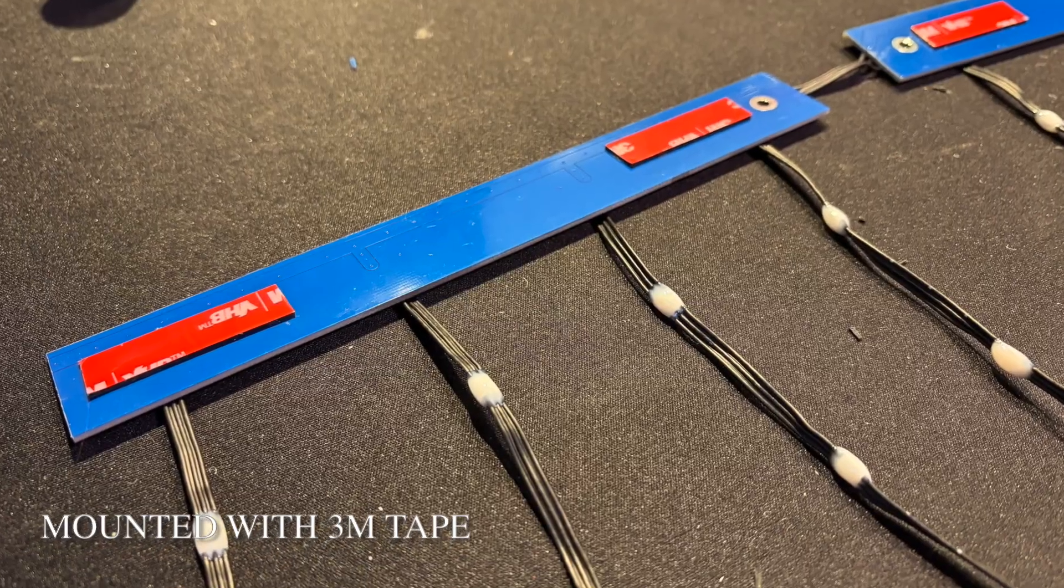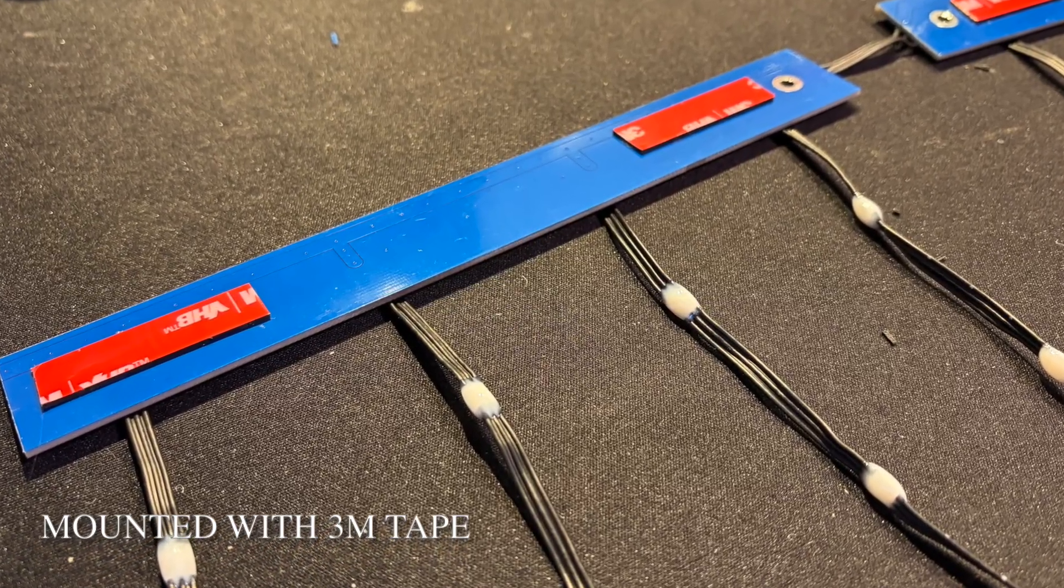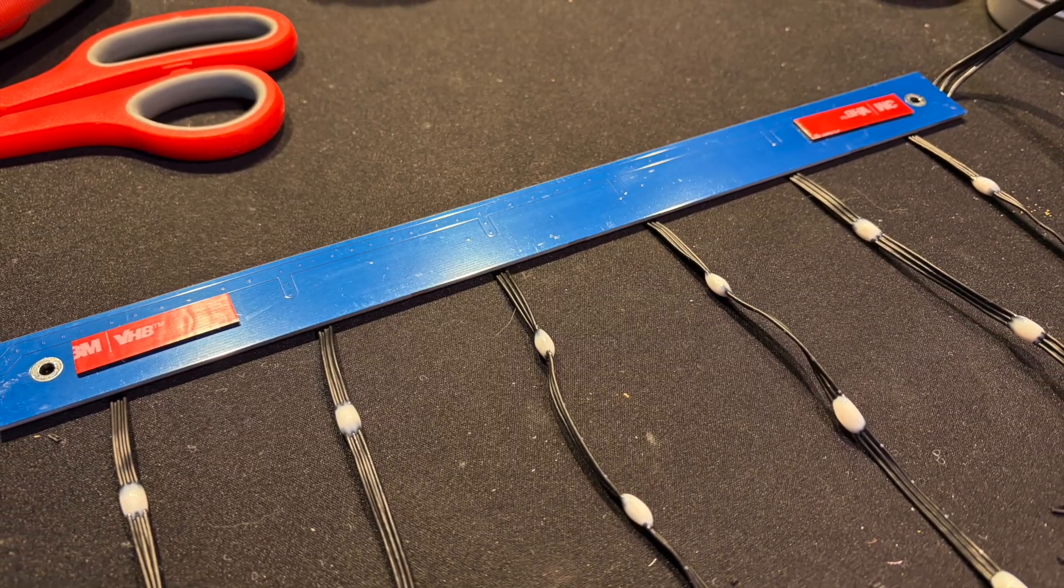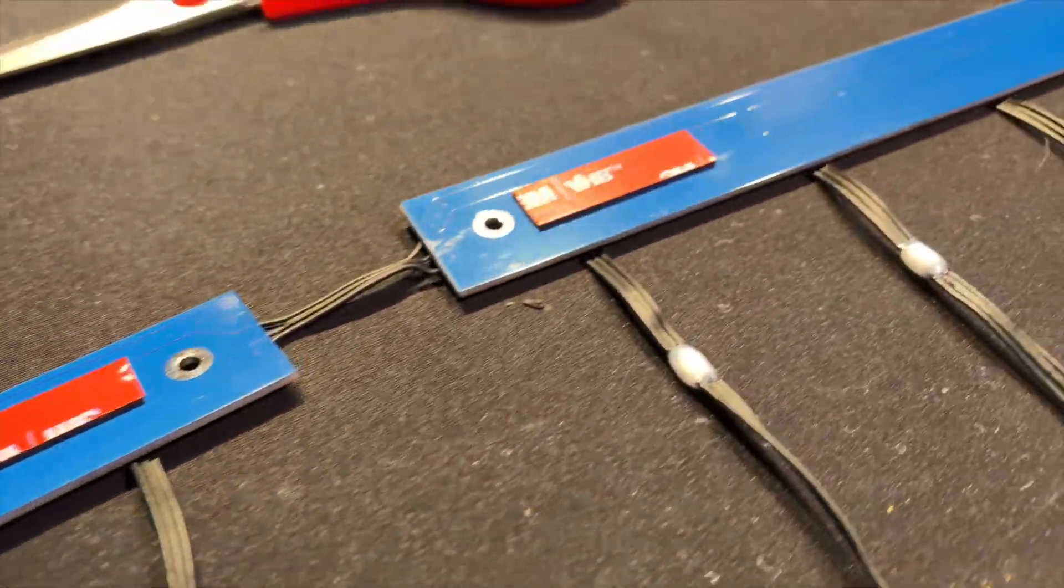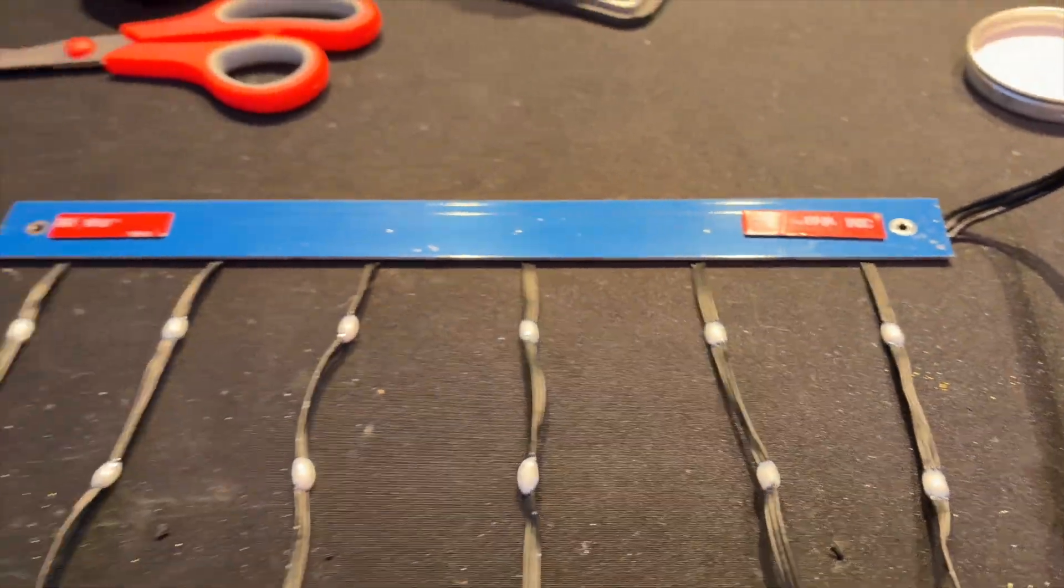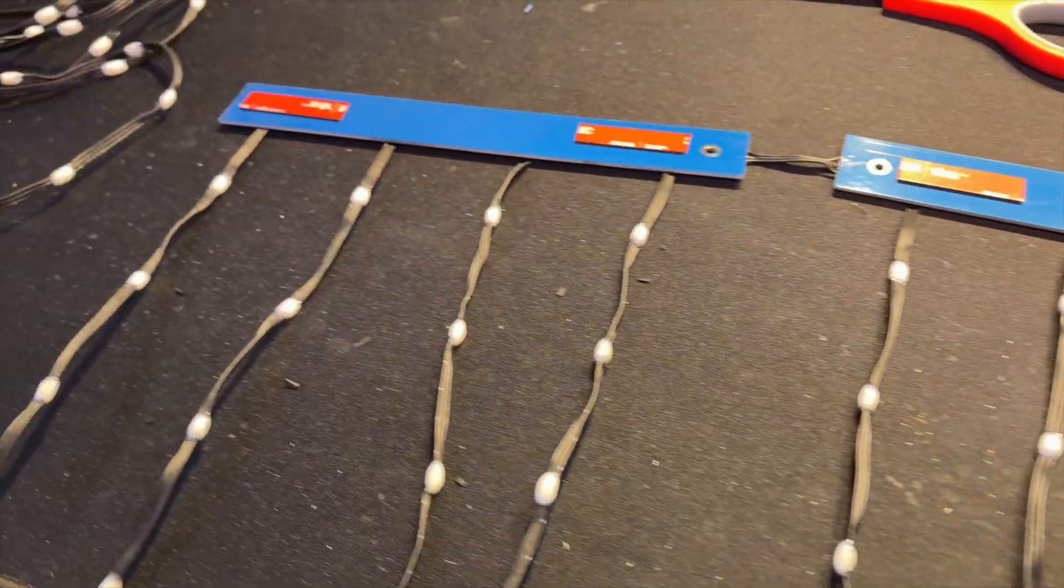For mounting, I kept it simple. I used 3M double sided tape, no drilling, no screws, and it held up perfectly for this test. When I scale this up, I'll be covering my window shutters, but this gives me a great look at how the system behaves.